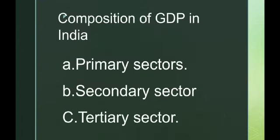Composition of GDP in India — Primary Sector: Agricultural operations are undertaken and allied activities for the production of raw materials are concentrated here. Examples include agriculture, cattle farming, fishing, mining, forestry, corn, and coal.